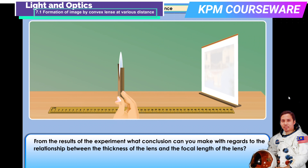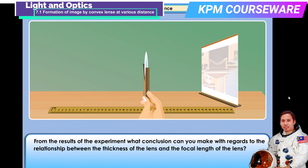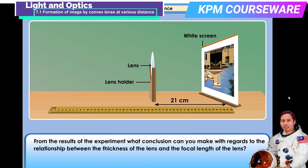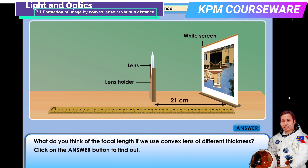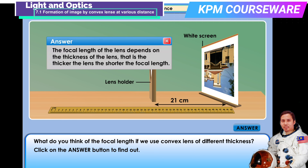From the results of the experiment, what conclusion can you make with regards to the relationship between the thickness of the lens and the focal length? The focal length of the lens depends on the thickness of the lens. That is, the thicker the lens, the shorter the focal length.